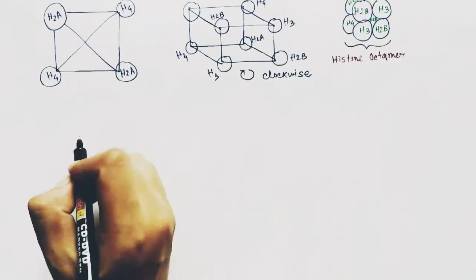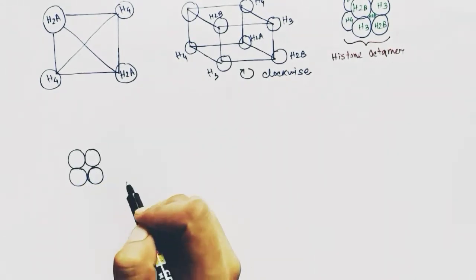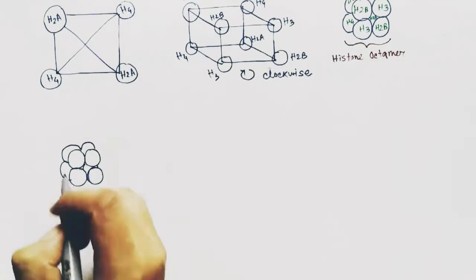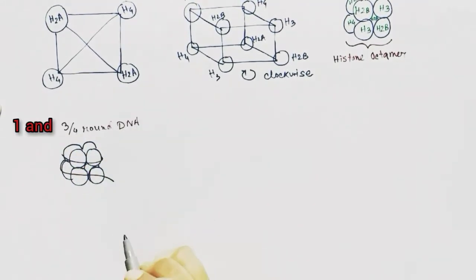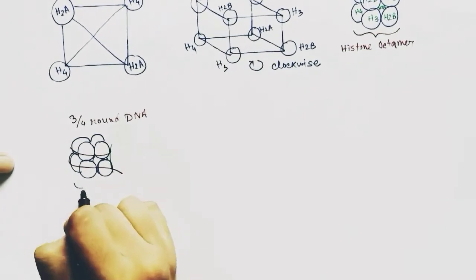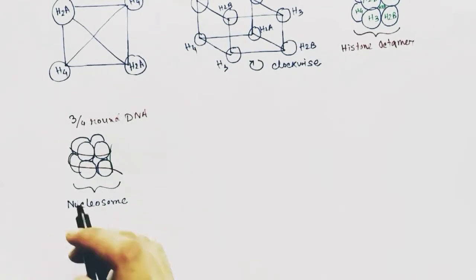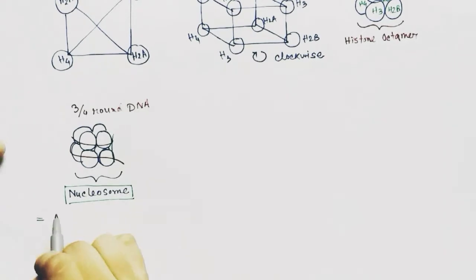The DNA thread wraps around the histone octamer. It goes one and three-fourths round of the histone octamer, and this structure is called nucleosome. Nucleosome is equal to the DNA thread plus the histone octamer.